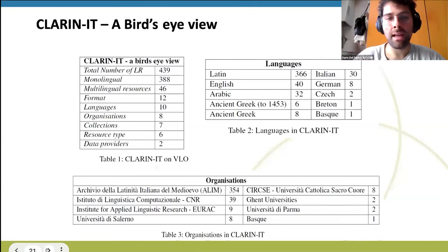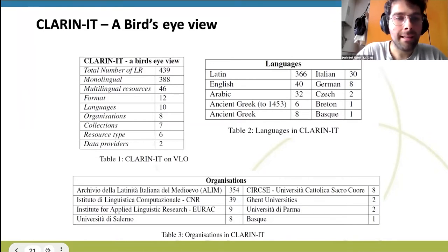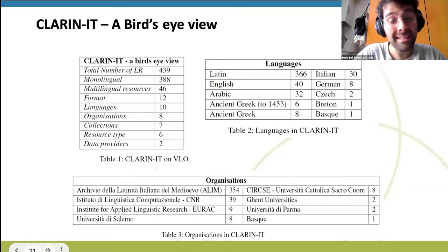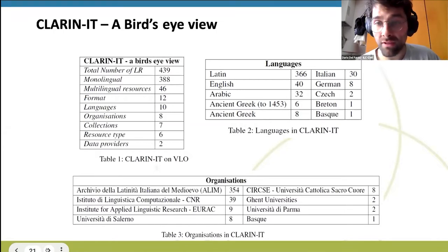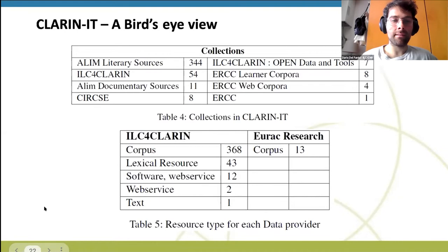From this initial case study, we found 439 language resources within the CLARIN-IT consortium. Interestingly, there are 10 different languages, with Latin being the most represented and Italian being the third. There are also eight different organizations involved in posting resources at the CLARIN-IT consortium. There is also a variety of collections within the resources and a variety of resource types for each data provider.